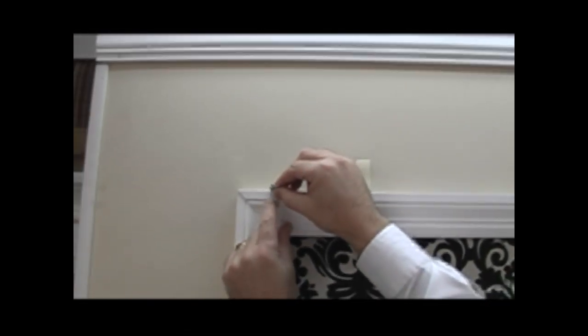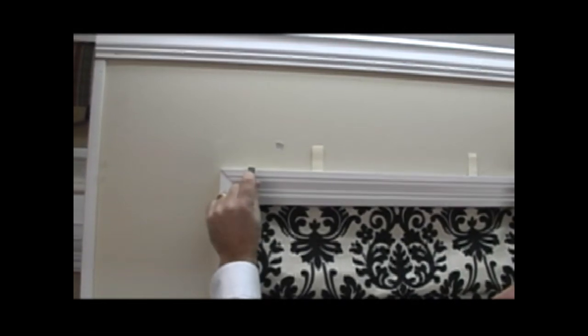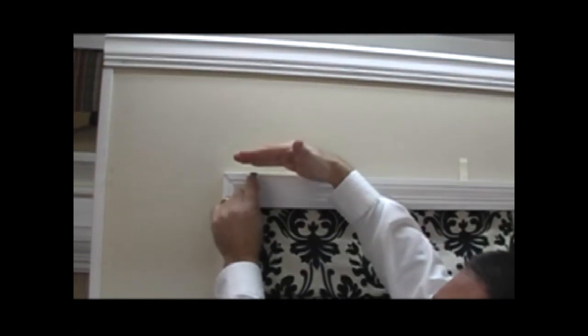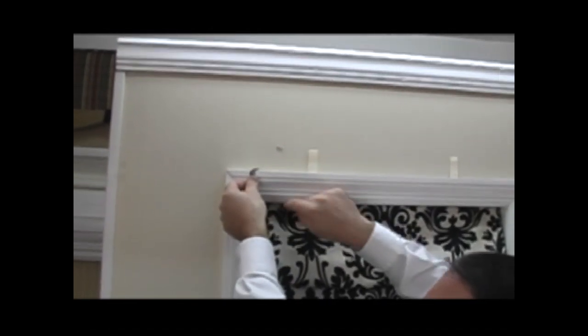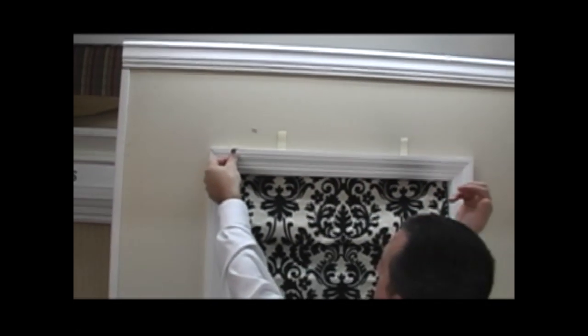If you mount it right to the window trim you'll just simply put a screw on each side, mount the L brackets, simply rest the shade on top of it, come from behind the shade and drive a screw right through the L bracket into the top rail. And that's all there is to it.